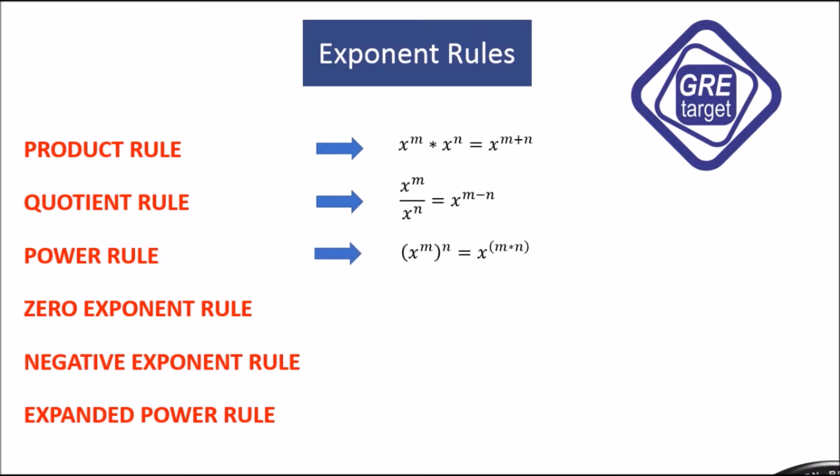The third rule is the power rule: x raised to m raised to n. We multiply the two exponents, so we get x raised to m times n.